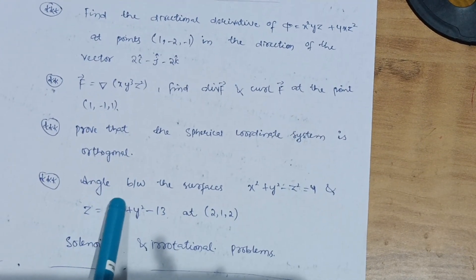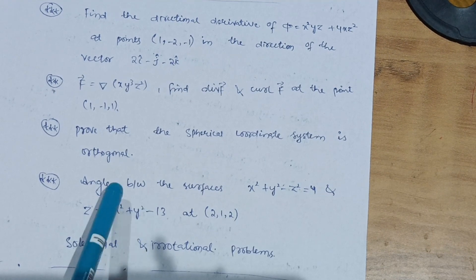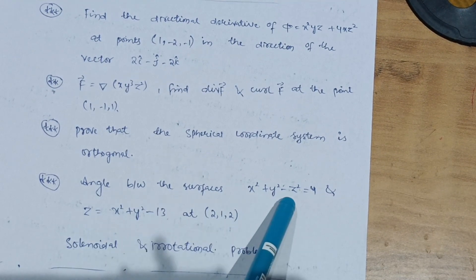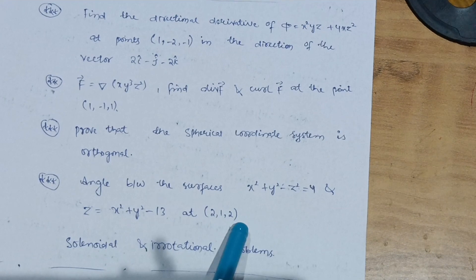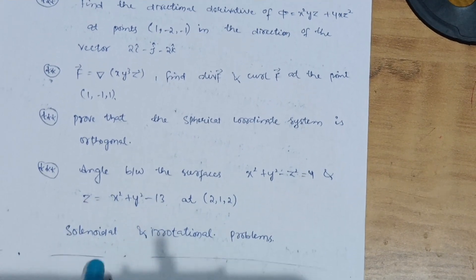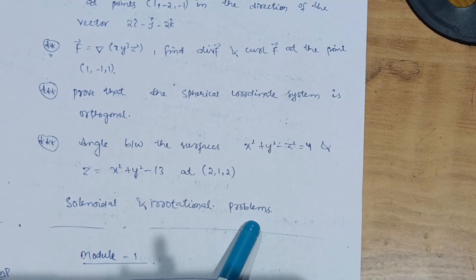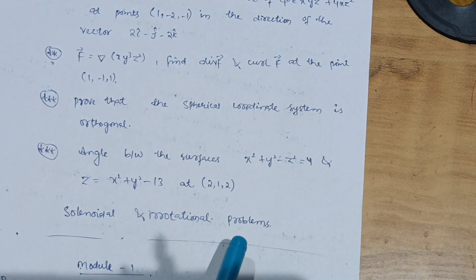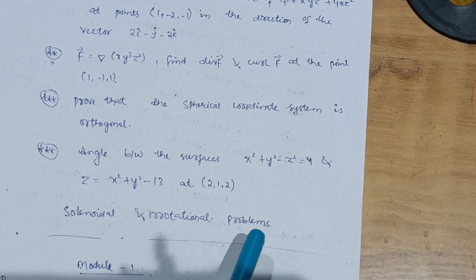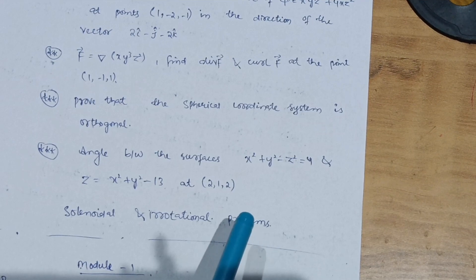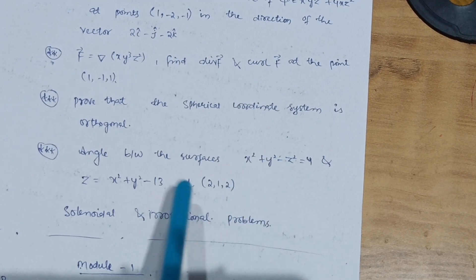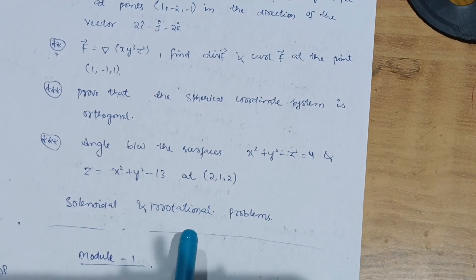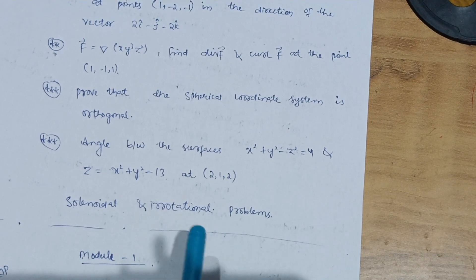Since no previous papers are available for this subject — as you are the first batch — refer to the 2018 scheme papers, which have the same syllabus with only different subject codes. Also try problems on angle between surfaces, for example: find the angle between x² + y² + z² = 4 and z = x² + y² − 13 at point (2, 1, 2). Try three or four problems on Solenoidal and Irrotational vectors as well. These questions are always asked in VTU examinations.